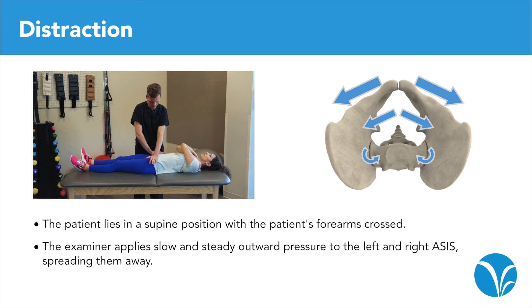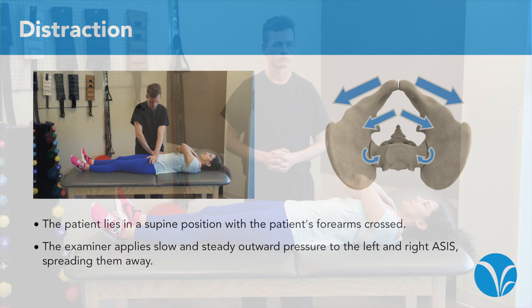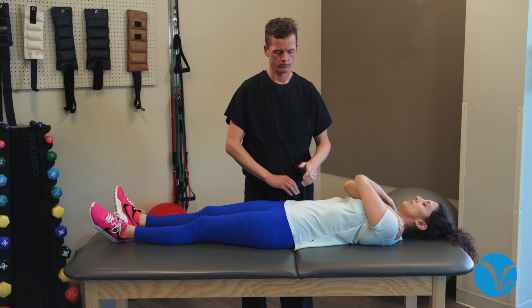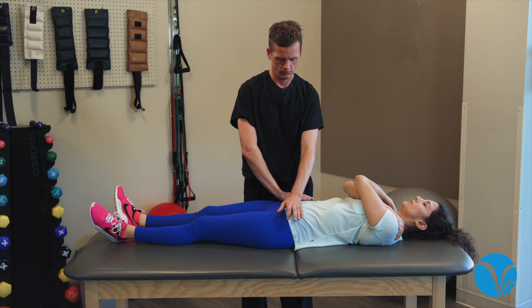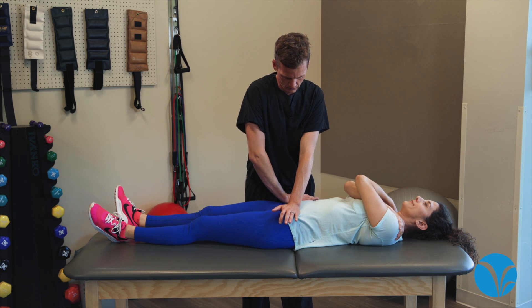For the distraction test, the patient lies in a supine position with the patient's forearms crossed. The examiner applies slow and steady outward pressure to the left and right ASIS, spreading them away. The test is considered positive if the patient's pain in the SI joint increases.